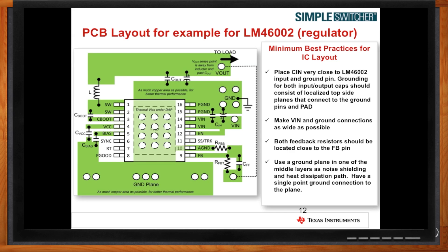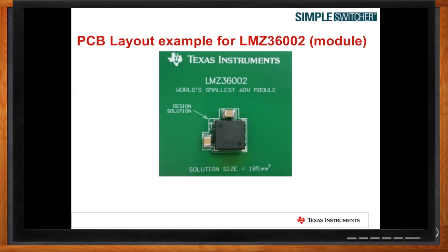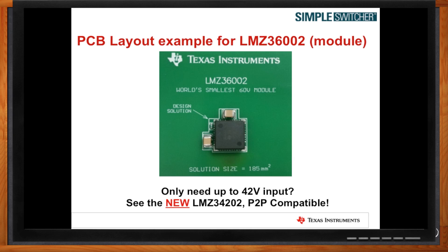For the fully integrated solution, board layout really isn't an issue, right? Actually it's not. With the LMZ36002, it's designed to be a plug-and-play solution. The minimum external components you need are the input and output capacitor and the RSET resistor to set the output voltage. If you only need up to 42 volts input, you can also look at the LMZ34202, which is a pin-to-pin compatible version of the LMZ36002 — a 60-volt, 2-amp module.